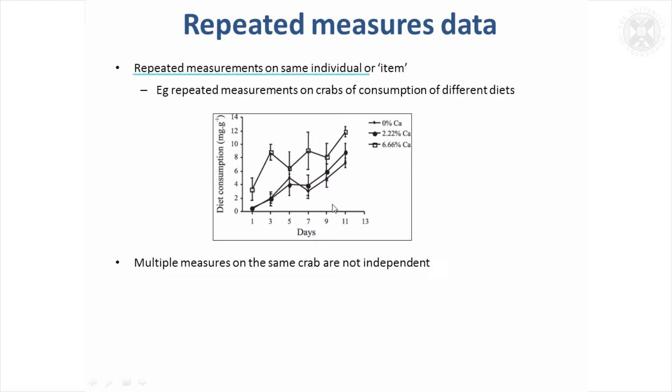So repeated measures data is when you're taking repeated measurements on the same individual or the same item. For example, in this experiment there were repeated measurements taken on crabs who were consuming different diets. We want to take into account that we're measuring the same crabs, so these data are not independent at each time point.